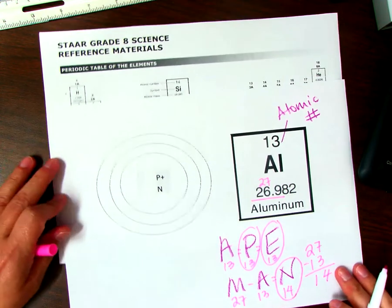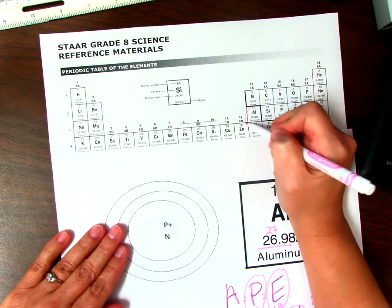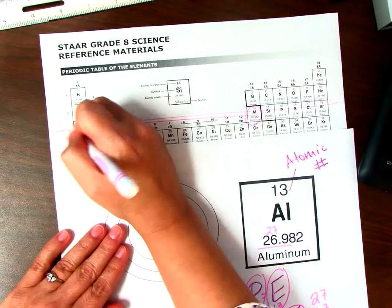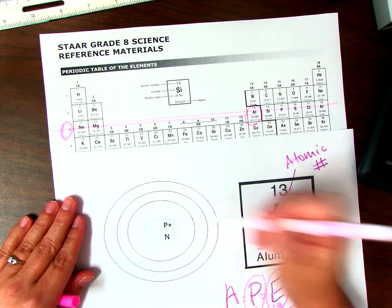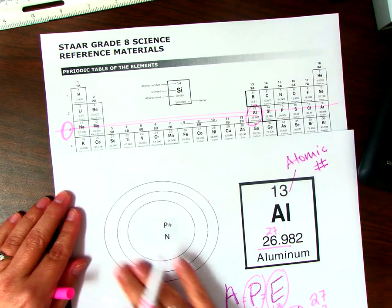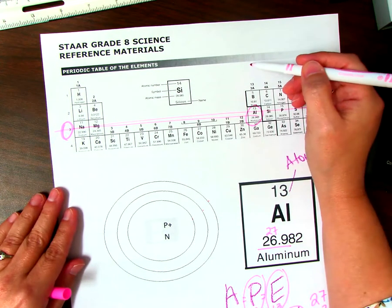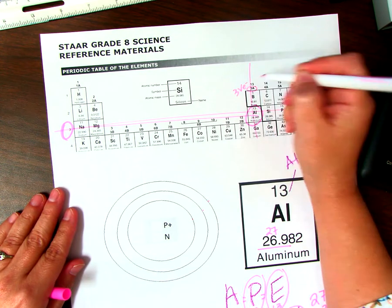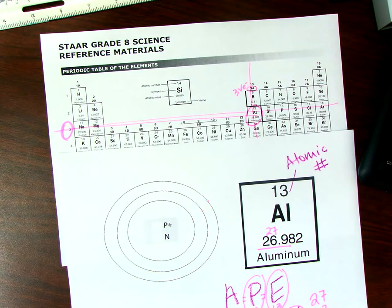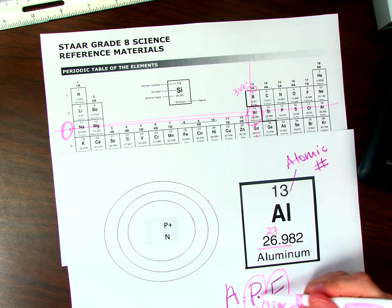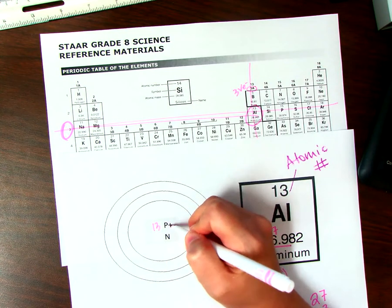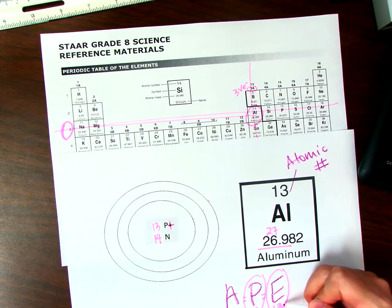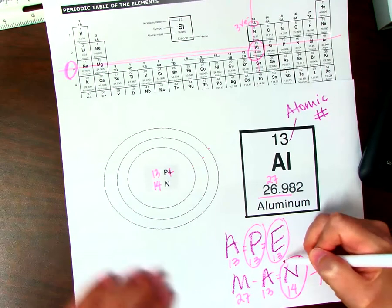So we see aluminum here in the periodic table. We see that it is in period 3, so we know that we're going to use all three energy levels in this Bohr model. We see that it's in group 13, and it says 3A here, so it's going to have three valence electrons. We have 13 positive protons, 14 neutrons, 13 electrons.